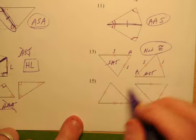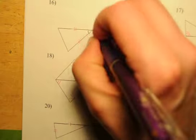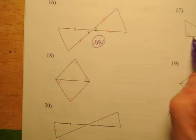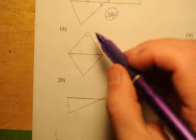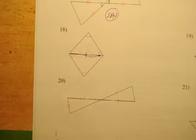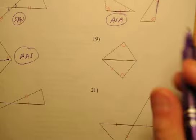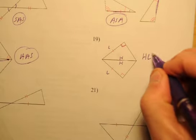Number fifteen: Side-Side-Side. Number sixteen: vertical angles give us Side-Angle-Side. Number seventeen: an included side between two congruent angles — Angle-Side-Angle. Number eighteen: a side not between the two angles — Angle-Angle-Side. Number nineteen: a right triangle with a hypotenuse and a leg — that's a Hypotenuse-Leg situation.